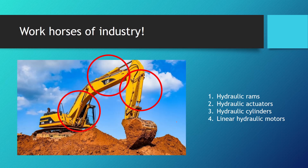We call hydraulic cylinders the workhorses of our industry, because there is so much work done by these. Using Pascal's law — pressure equals force divided by area — we can manipulate hydraulic cylinders into giving us a lot of force on the output. You will often hear people calling them hydraulic rams, which are actually hydraulic cylinders that use a plunger instead of a piston. They are also called hydraulic actuators and linear hydraulic motors.